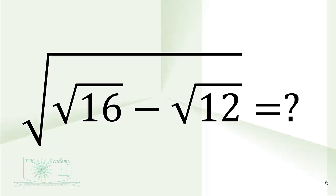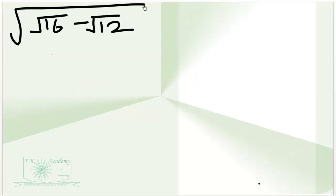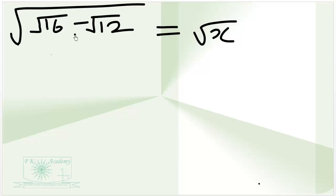Let's see how we can simplify the square root of square root of 60 minus square root of 12. Let the square root of square root of 60 minus square root of 12 be equal to square root of x minus square root of y.